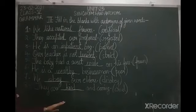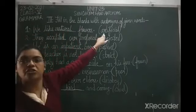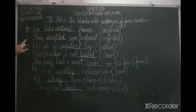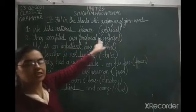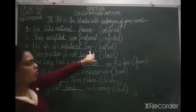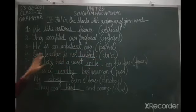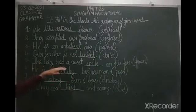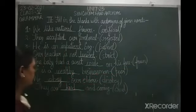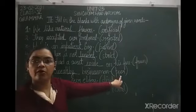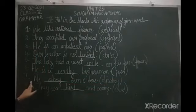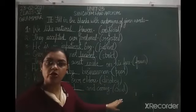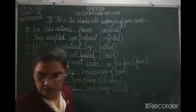Once again to revise Exercise 2: first, we like natural flowers — antonym of artificial is natural. Second, they accepted our proposal — antonym of rejected is accepted. Third, he is an impatient boy — antonym of patient is impatient. Fourth, our teacher is not lenient — antonym of strict is lenient. Fifth, the baby has a sweet smile on his face — antonym of frown is smile. Sixth, he is a wealthy businessman — antonym of poor is wealthy. Seventh, we obey our elders — antonym of disobey is obey. Eighth, they are kind and caring — antonym of cruel is kind.